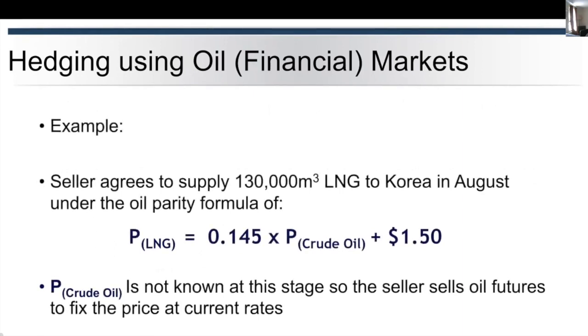If we take this example: a seller agrees to supply 130,000 cubic meters of LNG to Korea in August under the oil parity formula of price of LNG being 0.145 times the price of crude oil (we'll use Brent for this) plus an additional $1.50. We don't know what the price of the crude oil will be at this stage, so the seller sells the oil futures to fix the price at the current rates.